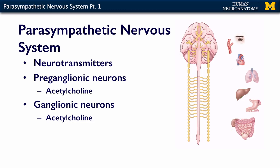The neurotransmitter used by the parasympathetic nervous system is acetylcholine. Both the preganglionic neurons that live within the brainstem and spinal cord and the ganglionic neurons that live in ganglia associated with cranial nerves or within the organ itself both use acetylcholine.